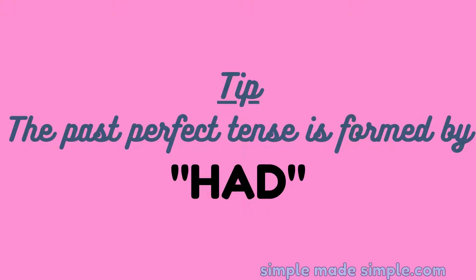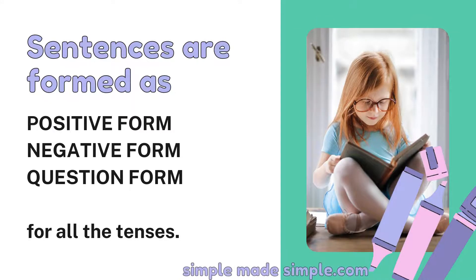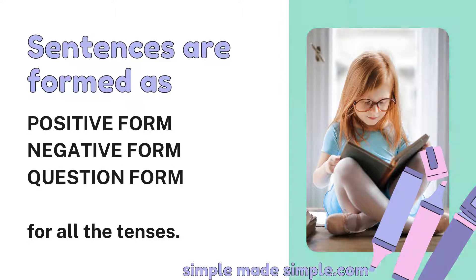The tip for past perfect tense is you should just add 'had' to your sentence. Sentences are always formed as either positive, negative, or question form for all the 12 tenses.